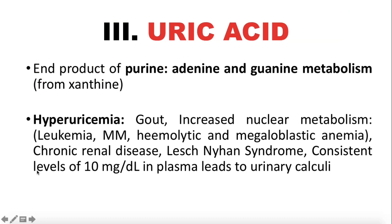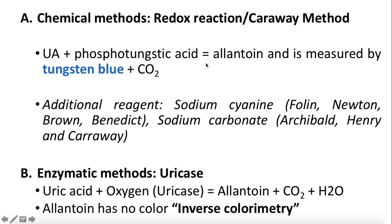Uric acid is the end product of purine catabolism, with associated diseases elaborated in the lecture. For the chemical method, we have the redox reaction or Carraway method, based on oxidation of uric acid by alkaline phosphotungstate acid. The allantoin formed has no color, so the phosphotungstate is reduced to tungsten blue, measured photometrically at 700 nanometers. Color intensity is directly proportional to uric acid concentration. For the enzymatic method, we have uricase — in the presence of this enzyme, uric acid is converted to allantoin (colorless), making this a type of inverse colorimetry.